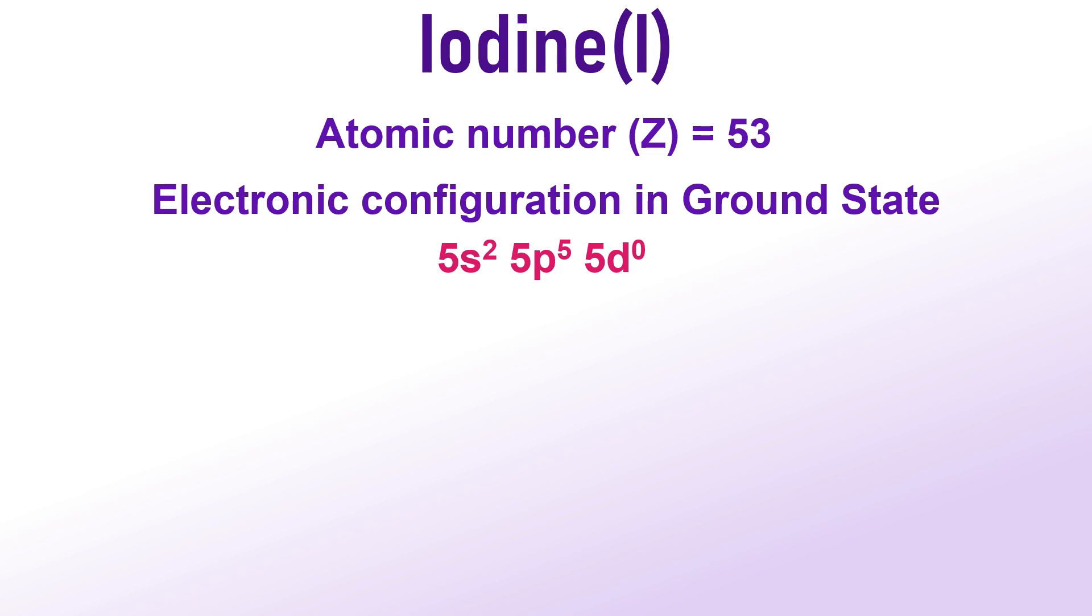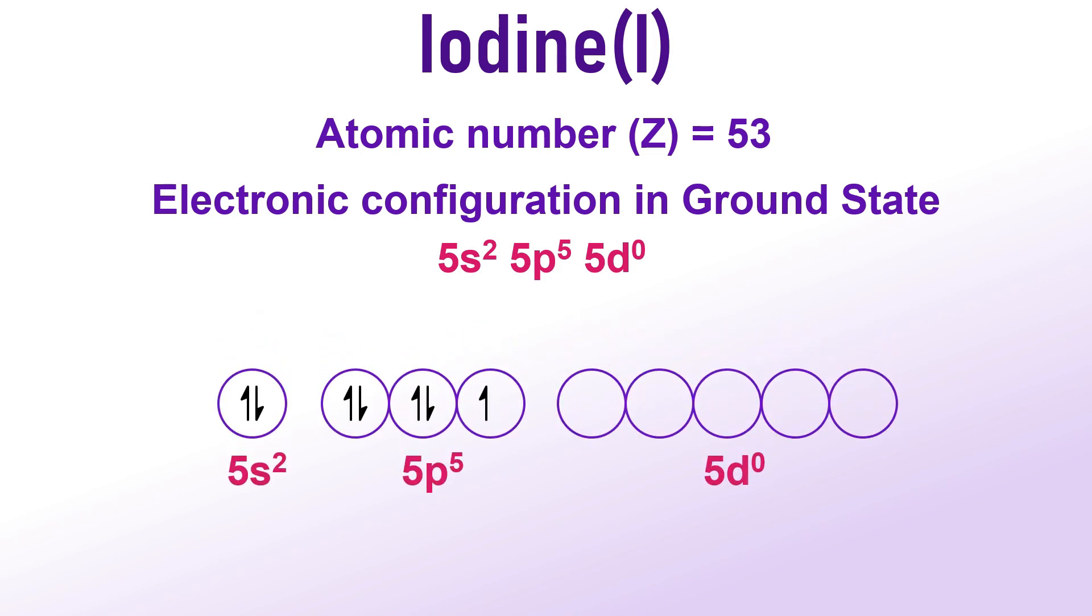For iodine, the outer electronic configuration in the ground state is 5s2, 5p5. It is important to note that the 5th shell also contains an MTD subshell. So, we can represent the configuration as 5s2, 5p5 and 5d0 as shown on the screen. However, we can clearly see that there is again only 1 unpaired electron in one of the 5p orbitals.